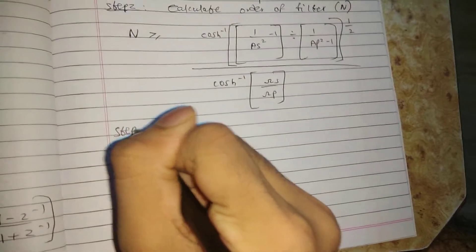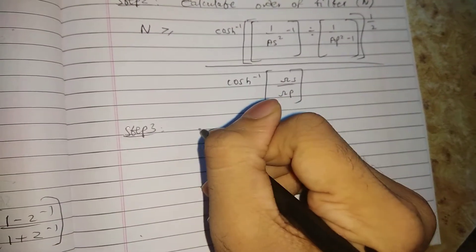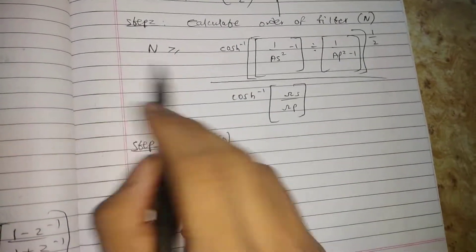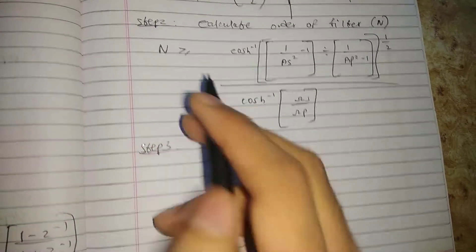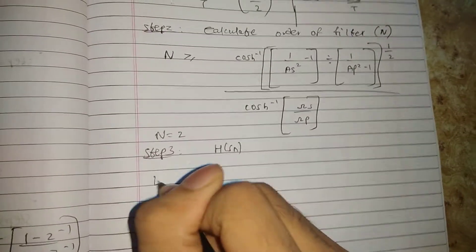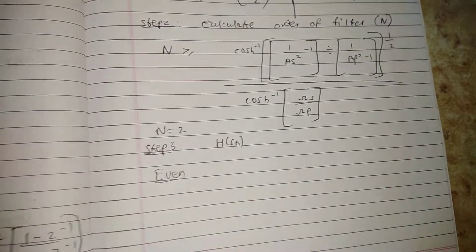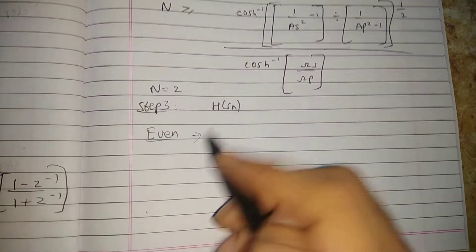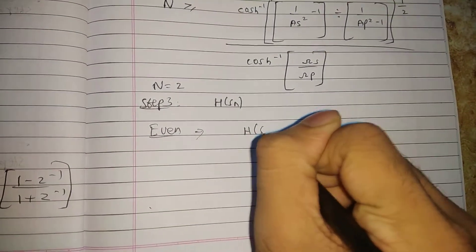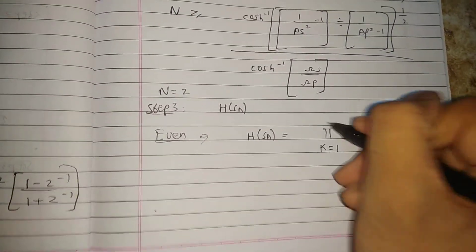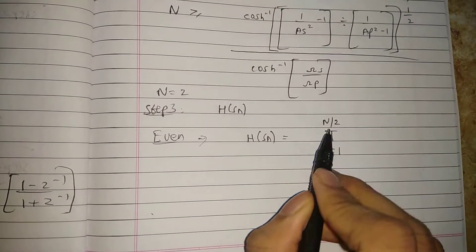Step number three is to calculate the unnormalized transfer function H(sn). Depending on the value of n, there are two cases. If n is even, for example n equals 2, then H(sn) uses the even formula. The product runs from k equals 1 to n/2.